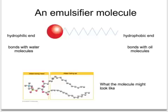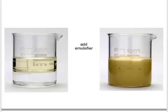In this way, the emulsifier molecule acts as a kind of bridge between the water and the oil. One end binds to water, one end binds to oil, and therefore enables the oil and water to mix without separating from each other. So if you take a mixture of oil and water and add an emulsifier and stir vigorously, you end up with what's known as an emulsion — a mixture of two liquids where they don't separate from each other.